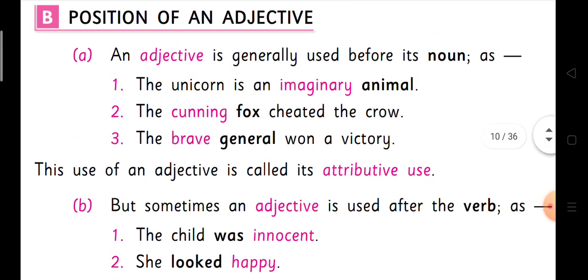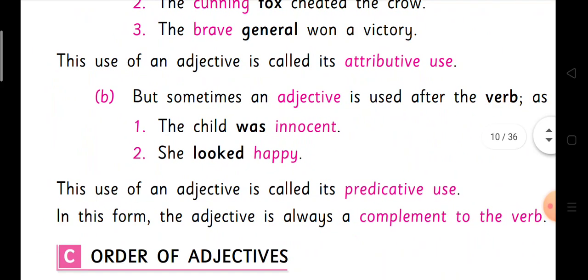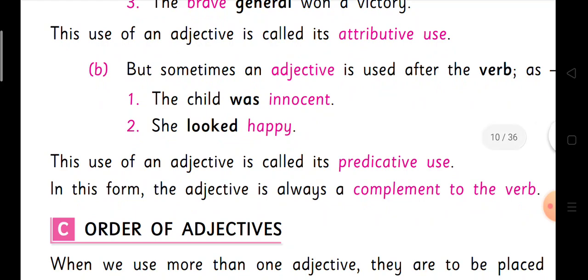In the general case, the adjective is always used this way. Now we come to the next one: the predicative use. Sometimes an adjective is used after the verb. Adjectives are usually and generally placed before the noun, but in these sentences, we see the adjective is used after the verb.